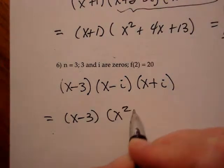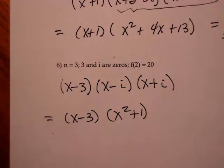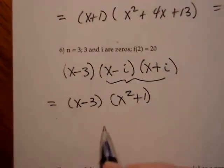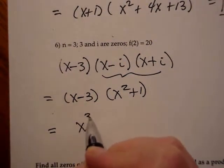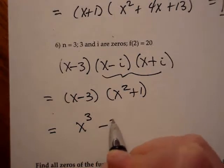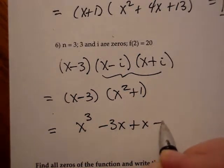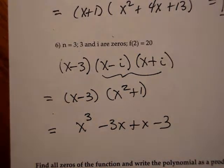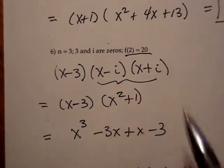Okay, so when I multiply these out, I'm just going to do that quickly. You'll have to trust me that I get x squared plus 1 by multiplying these two. And then I'll end up with x to the third minus 3x squared plus x minus 3. Now this time though, the last piece of information they give me is that f of 2 equals 20.